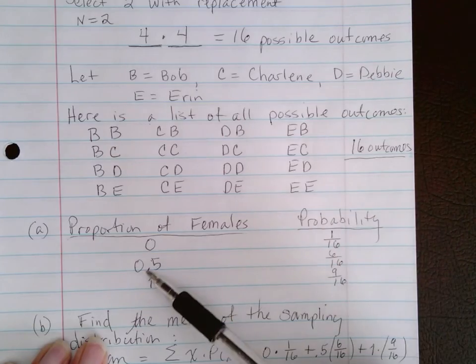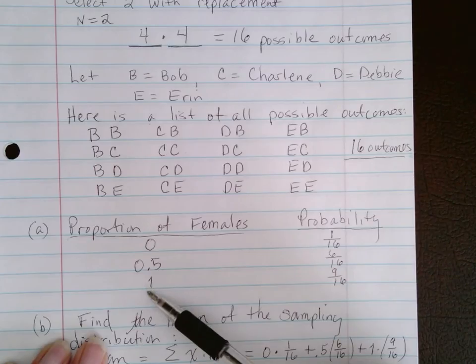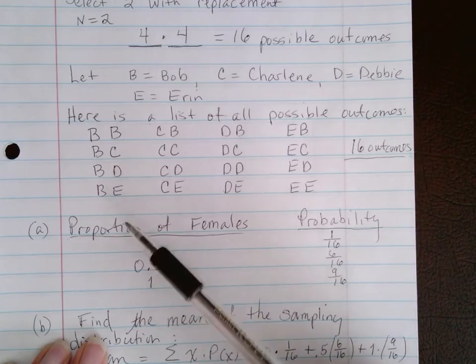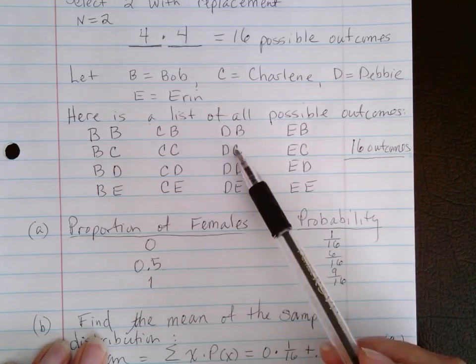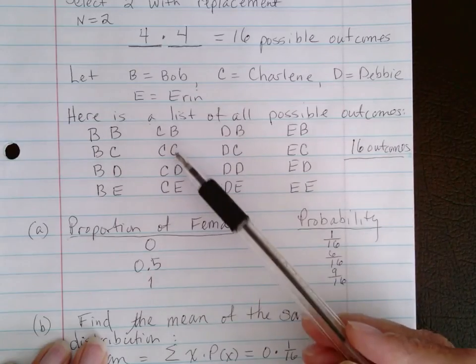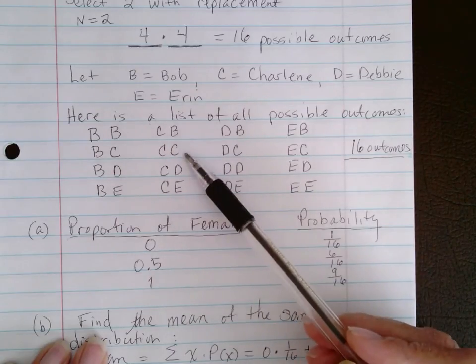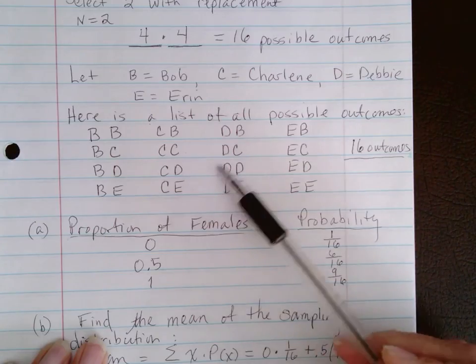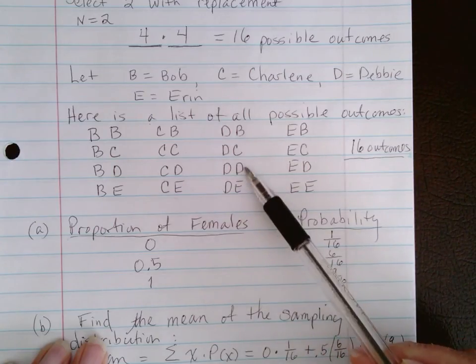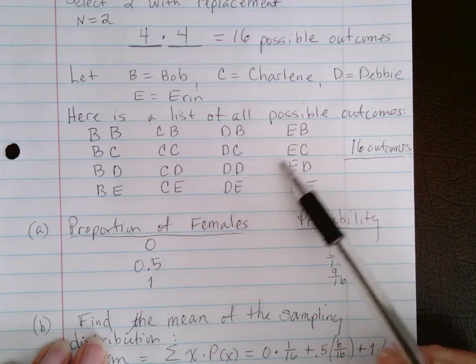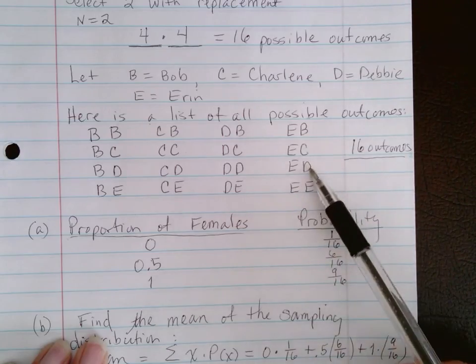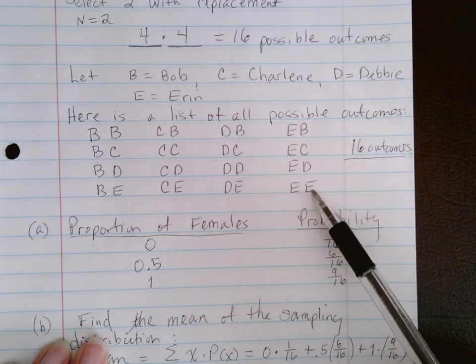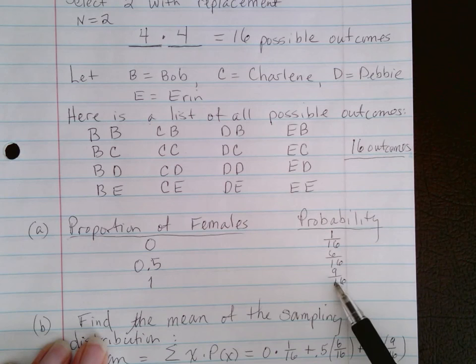If we count how many outcomes consisted of all females, both females, we're going to exclude any that have a B in it because B was for Bob who was a male. So we would have one, two, three, four, five, six, seven, eight, nine. Nine outcomes were all female. So that's where these numbers come from.